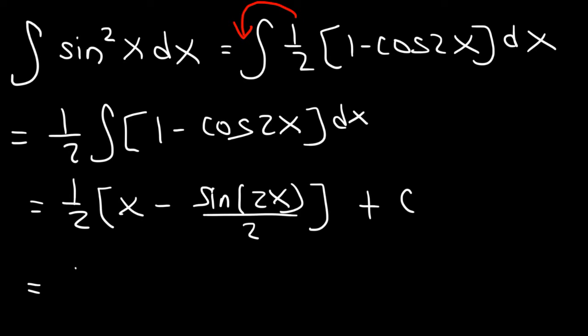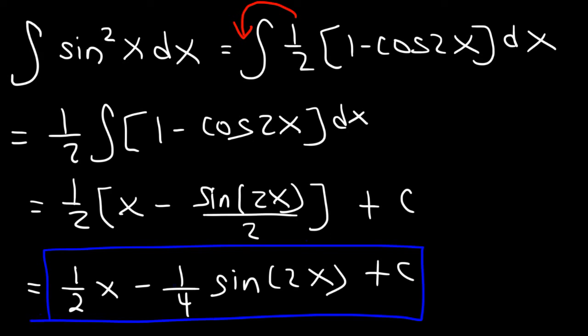So the final answer is going to be 1 half x, and then 2 times 2 is 4. So that's going to be 1 fourth sine 2x plus c. So that's the integral of sine squared x.